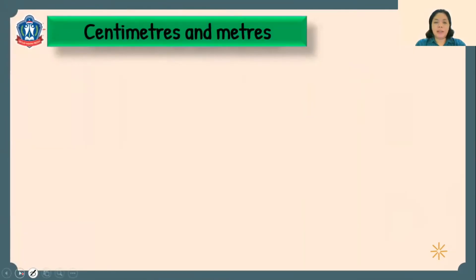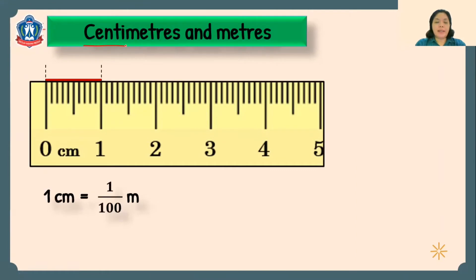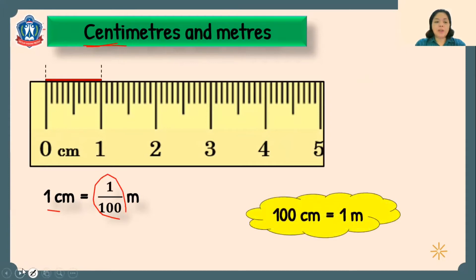Let's go to centimeters and meters. On our ruler, from 0 to 1 is one centimeter. If we have 100 centimeters, that is equal to 1 meter. When we say centimeter, it means one part of a hundredth of a meter. The prefix centi means hundredth — one part out of 100 equal parts. So 1 cm equals one hundredth of a meter, which in decimal form is 0.01. Therefore, 1 cm is equal to 0.01 meter. Don't forget that.